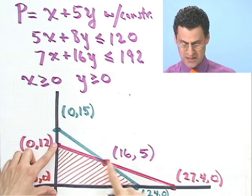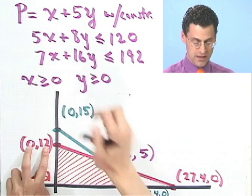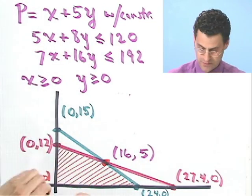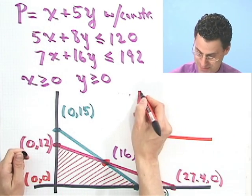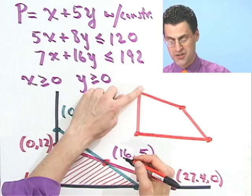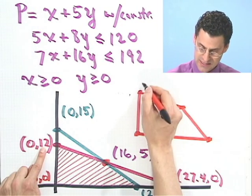One of those vertices will represent the maximum value this linear function takes on. The other one will represent the minimum value. So if you want the maximum or minimum value of a linear function with constraints that are straight lines like this, you just need to look at the vertices. So let's just plug in each point. Let me draw a little mock-up of this. And I'm just going to put the values of p at each of these vertices.